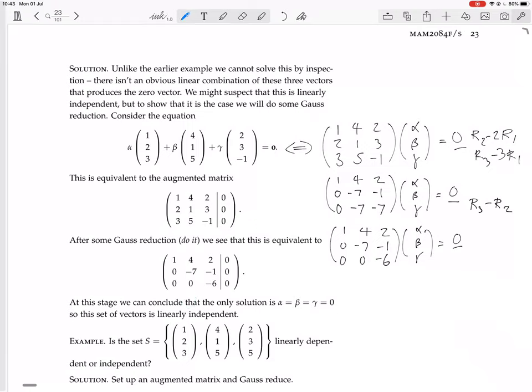And it says at this stage we can conclude that the only solution is alpha equals beta equals gamma equals 0. If you can't see why they're already concluding the only solution is the trivial one, can you see that this matrix can be reduced to the identity matrix by further steps? If you can't see that, then you should actually just go ahead and do it. Do it in your head, or if you can't do it in your head, then do it on a piece of paper.